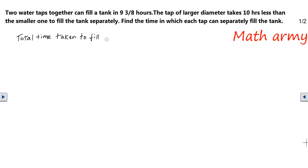Total time taken to fill tank is equal to 9 3/8. So I will be transferring this 9 3/8 to improper fraction. 8 into 9 is 72 plus 3 is 75 divided by 8. This is the actual time it is taking to fill the tank when you are filling with two taps together.